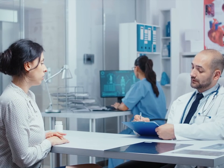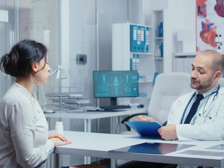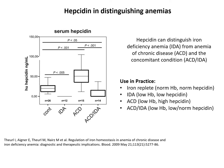Proper diagnosis is the key to improving care and avoiding morbidity in patients at risk from iron-related conditions. Hepcidin, the master regulator of iron homeostasis, can shed light on a number of those conditions, including iron deficiency, anemia of chronic disease, hereditary iron regulatory conditions, and a wide range of inflammatory or infectious agents.